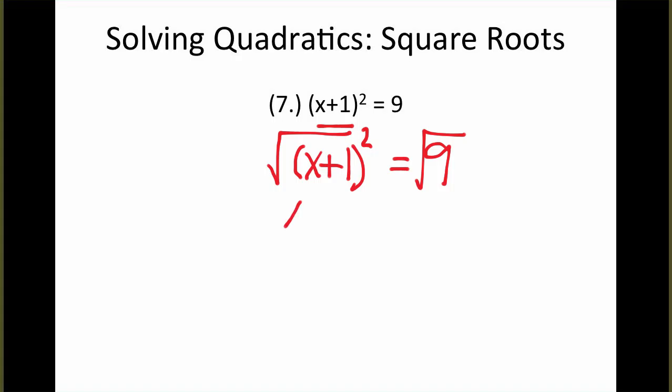When you do that here, you end up with x plus 1 on the left side of the equation, and then on the right, it will equal a positive or a negative 3. So when you isolate the x, you'll subtract 1 from each side, and you would end up with negative 1 plus or minus 3.